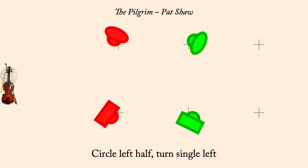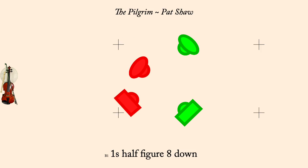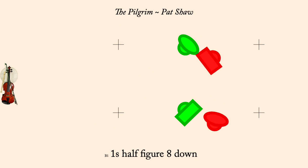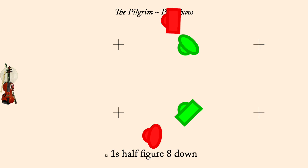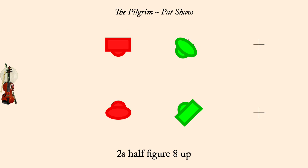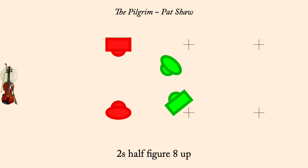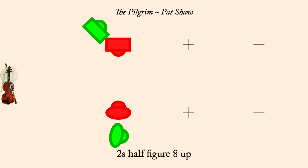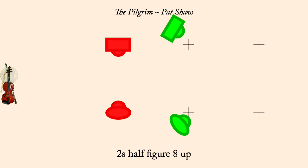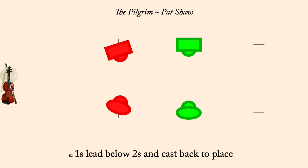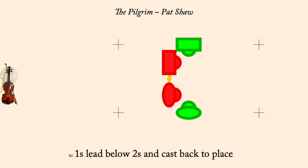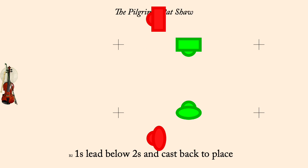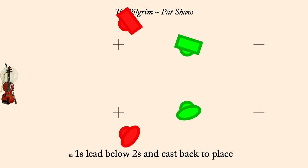Ones half figure eight down. Twos half figure eight up. Ones lead below twos and cast back to place. Face neighbor, two changes of rights and lefts.